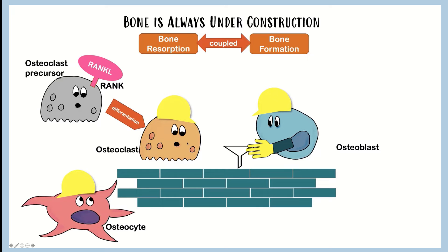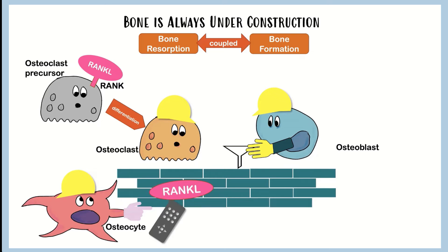Where osteoclasts only last about 12 days, osteoblasts last about 100 days - the job's easier, but they can't do it forever. So a proportion of these osteoblasts will differentiate into osteocytes, and then they'll remain in bone for many years. Their job is really easy - they're just controlling things and overseeing the work that's going on. They can do this in a couple of ways: they too can produce RANK ligand, which can go to these precursor cells and cause more osteoclasts to come into the bone marrow.